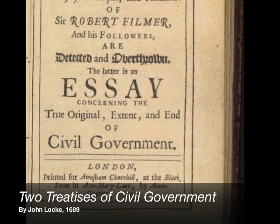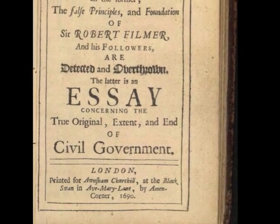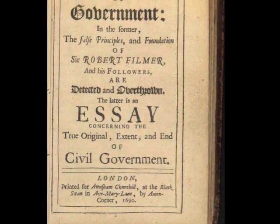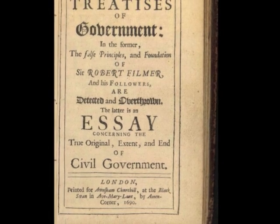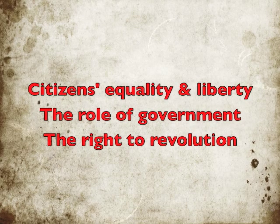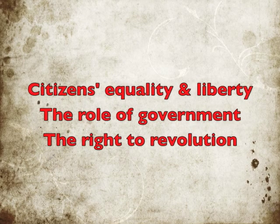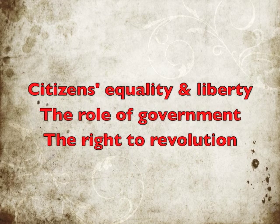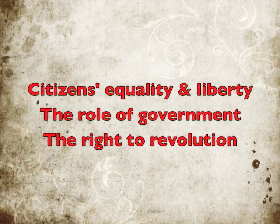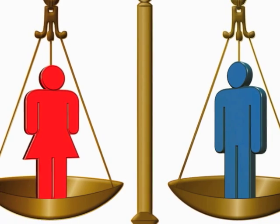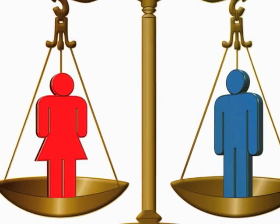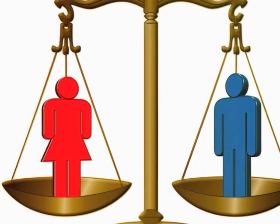Locke is widely considered the father of classical liberalism, a political philosophy concerned primarily with defending the rights of the individual and limiting the power of government. The main aspects of Locke's political thought that can be found in the Declaration of Independence are: citizens' equality and liberty, the role of government, and the right to revolution. For Locke, the political equality of all men was rooted in the fact that all were endowed by nature with the same basic physical faculties. This essential equality means that all men must be free to pursue their self-interests, as long as they don't impede the rights of others to do the same.